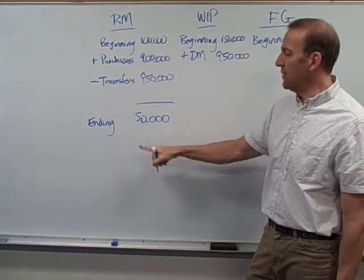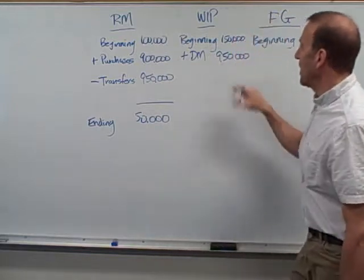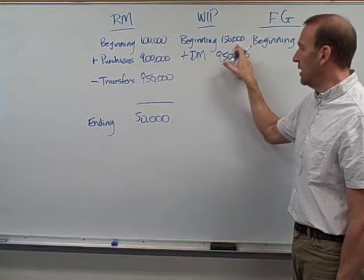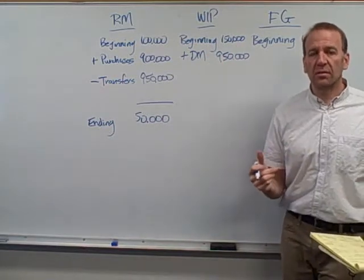So when we do this for the next period, this will become our beginning balance. Let's look at work in process now. We have $150,000 of costs, that's just not material costs, it's all sorts of costs in there. So what other costs go into work in process?